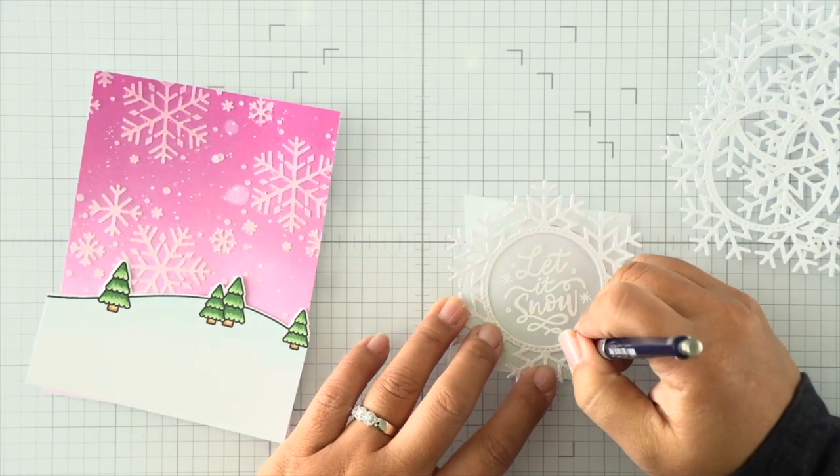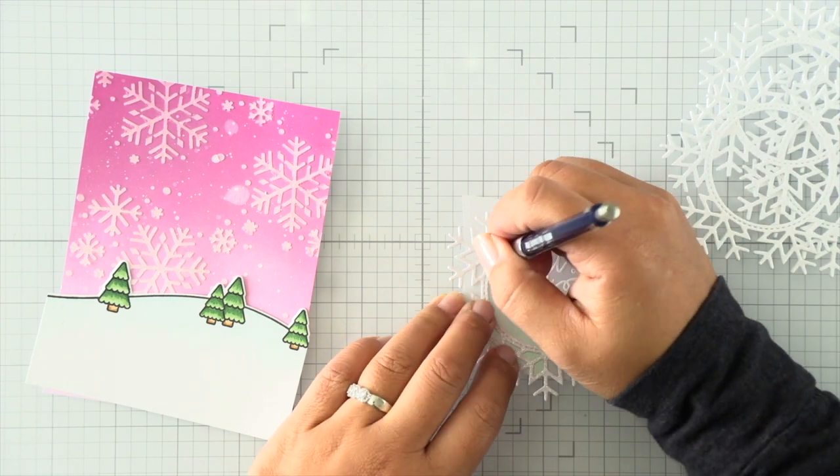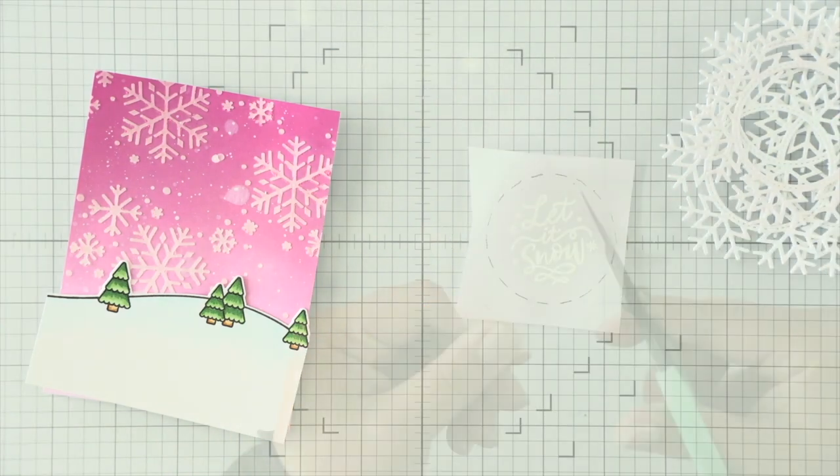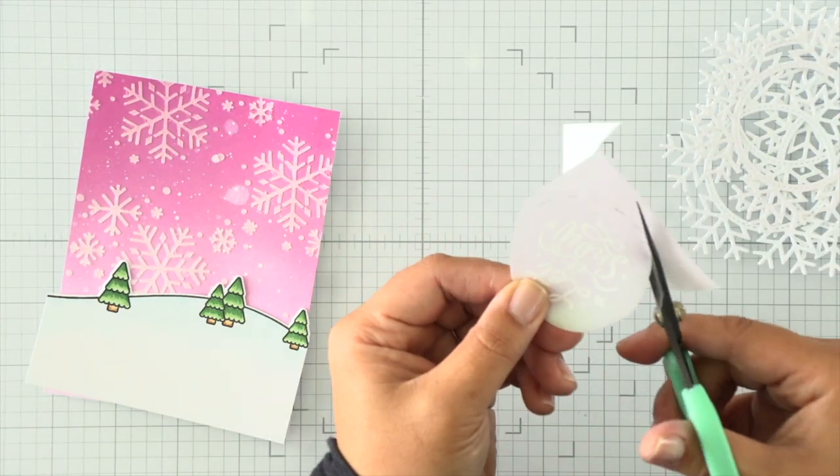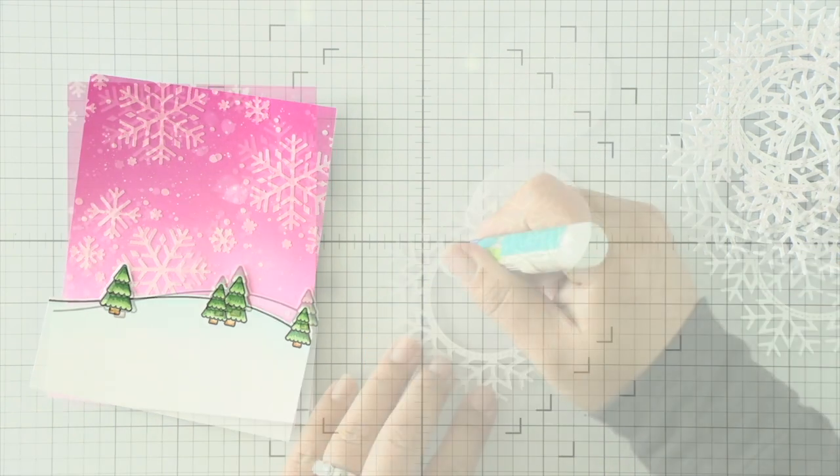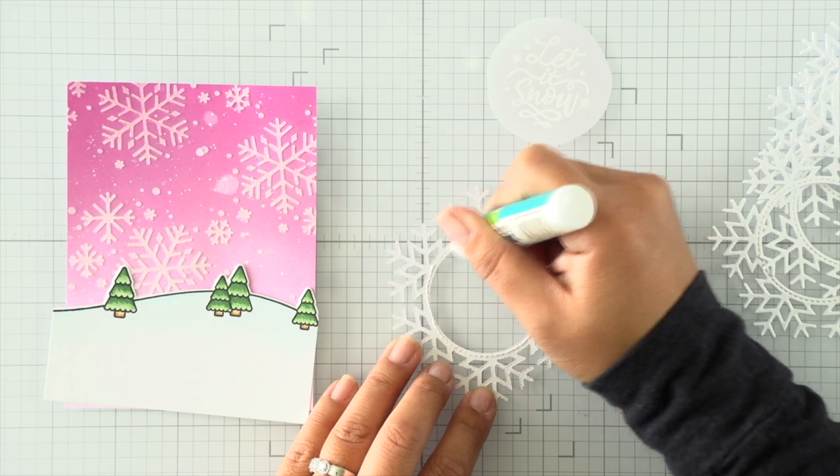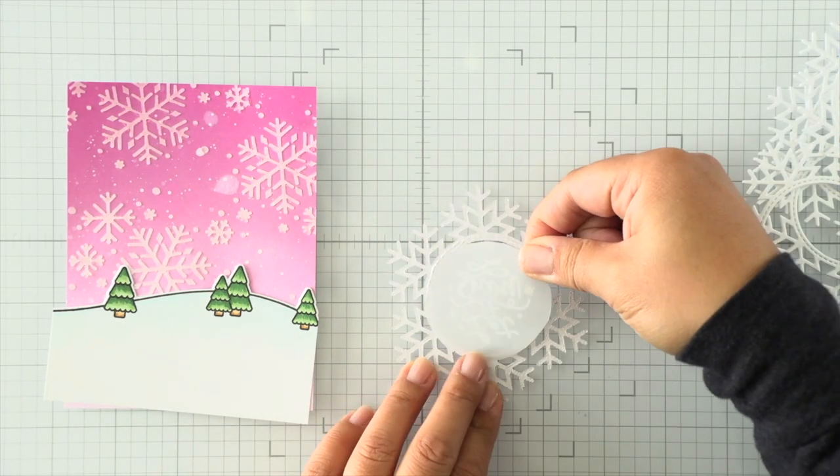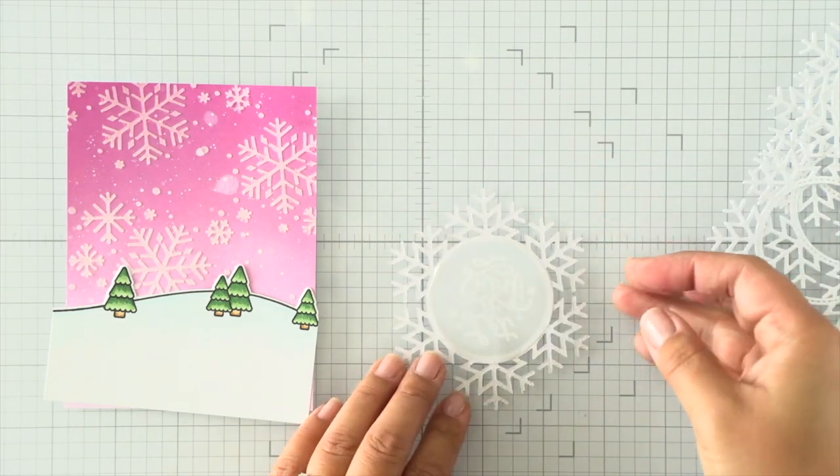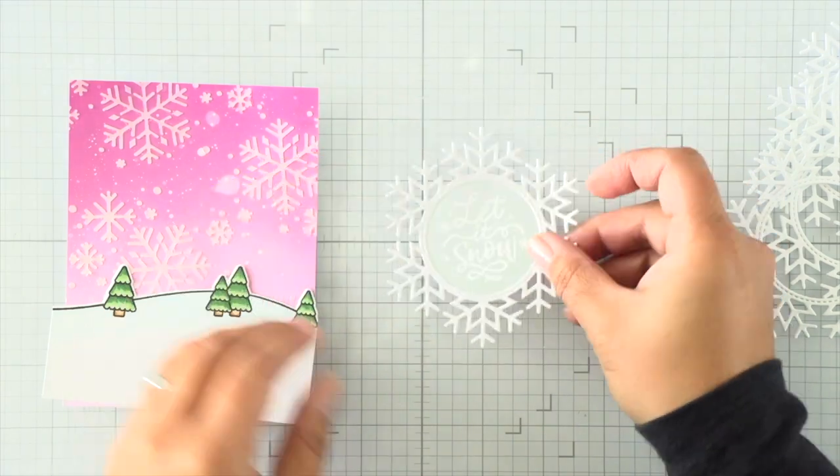For my snowflake shaker I'm using a pencil to outline the outer border of the ring around the snowflake to create my shaker window. I'll fussy cut around that circle on the inside, just slightly smaller so it can still attach to the inner portion of this ring on my snowflake.